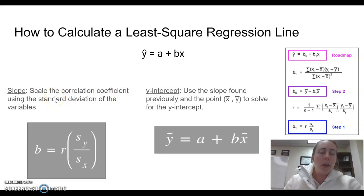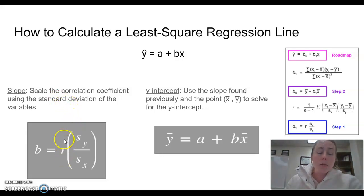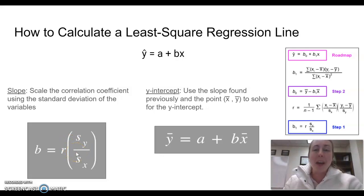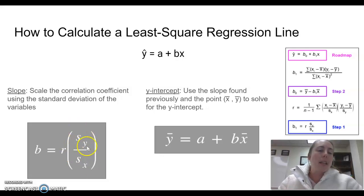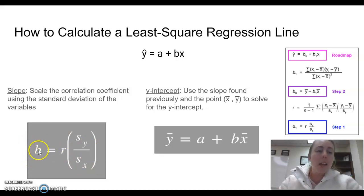To find the slope of our least squares regression line, we're going to scale the correlation coefficient using the standard deviations of the variables. We take r, the correlation, and multiply it times the standard deviation of y divided by the standard deviation of x. Just like slope is a ratio of y over x, we put the y's on top. That gives you the slope of the line.